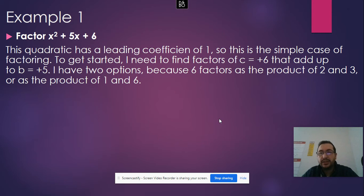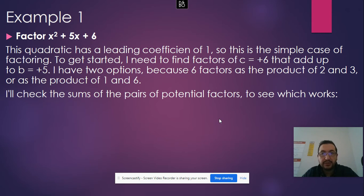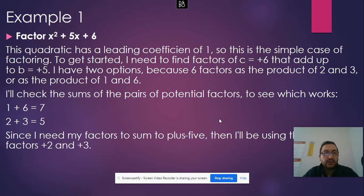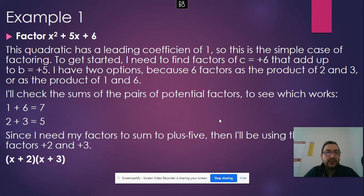Two numbers that multiply to give 6 could be 6 times 1 or 3 times 2. But 6 plus 1 is 7, which is not 5. However, 2 times 3 gives 6, and 2 plus 3 equals 5, which is b — that's the one we're looking for. So the pair of factors is 2 and 3, and we can write the factored form as (x + 2)(x + 3).